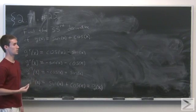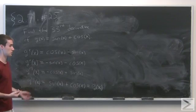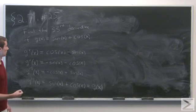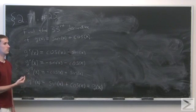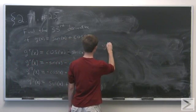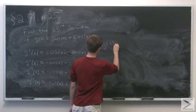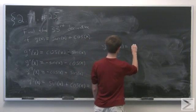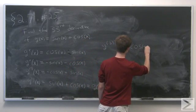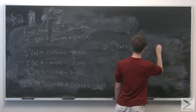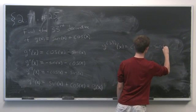The thirty-second derivative is just g(x). If we take the derivative one more time, the thirty-third derivative equals the first derivative. Therefore, the 33rd derivative of g equals cos(x) - sin(x).